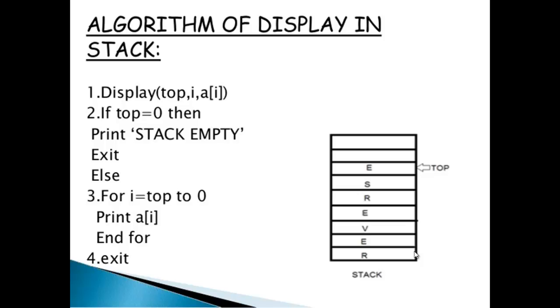Next is the algorithm for Display. Top, i, and a[i] are the parameters used in this algorithm. a[i] represents the Array of Elements. If Top equals 0, then it prints Stack Empty. Else, a loop is executed from Top to 0 to print the values stored in the Array of the Stack. So here, the word Reverse will be printed in backward direction.